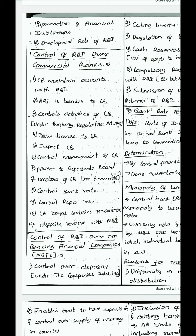RBI controls the management of commercial banks. It has the power to supersede the board of directors of a commercial bank for 6 months if that bank is working against the interest of depositors. RBI also controls bank rate — the interest on loans RBI gives to commercial banks. It controls repo rate — commercial banks can take extra loans by depositing securities with RBI, and even that loan is limited. Additionally, commercial banks must keep a certain percentage of their deposits as reserves with RBI.